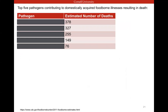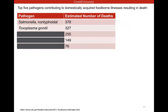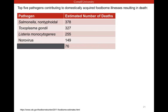Comparing Listeria to other foodborne pathogens, I've got the top five pathogens that contribute to foodborne illness resulting in death in the United States. Salmonella is actually number one, causing 378 deaths. Toxoplasma gondii — the parasite that's the reason why pregnant women aren't supposed to change the litter box — is number two. And Listeria is number three, causing 255 deaths in the U.S. each year. Norovirus comes in at number four and Campylobacter at number five.